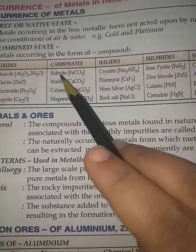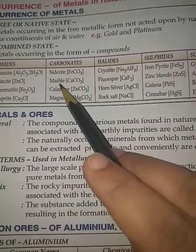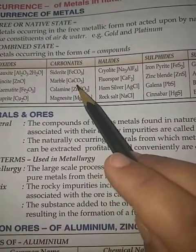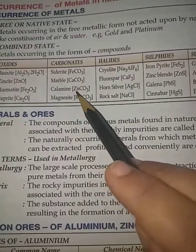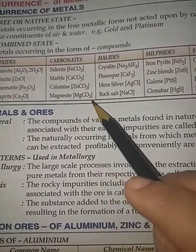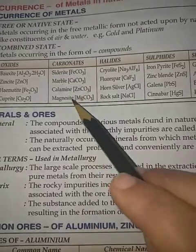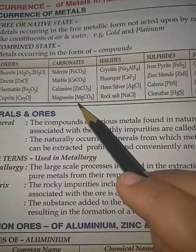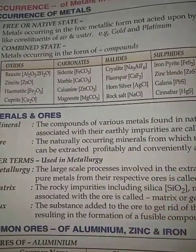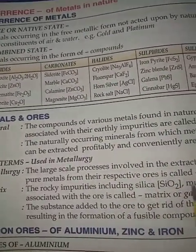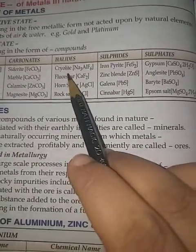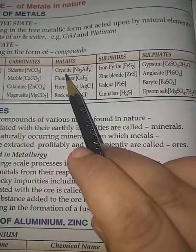Carbonates: Siderite is FeCO₃, marble is CaCO₃, calamine is ZnCO₃, and magnesite is MgCO₃. These are all the carbonates of their respective metals.